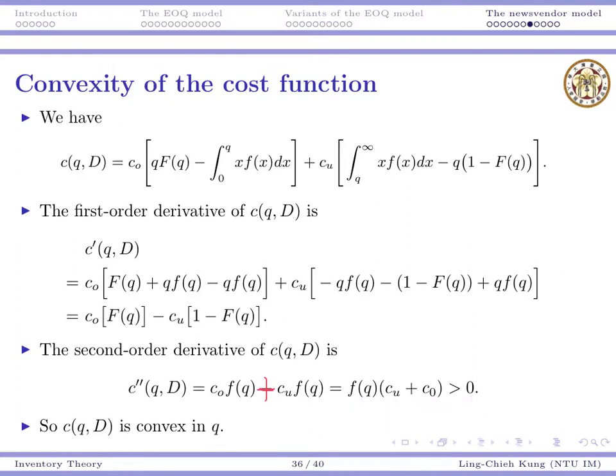Now, no matter what's cu or co, of course, they are positive. And also, for PDF or for likelihood, they must be non-negative. So the whole term here is positive. So we can say the cost, the expected cost is convex.